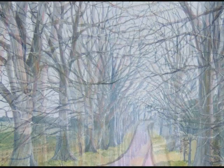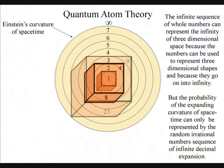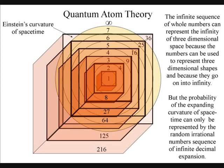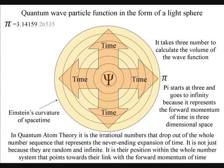It is easy to see how our infinite sequence of whole numbers can represent the infinity of three-dimensional space, because the numbers can be used to represent three-dimensional shapes. But in quantum atom theory, it is the irrational number pi that drops out of the whole number sequence that represents the never-ending expansion of time. It is not just because it is random and carries on expanding forever.